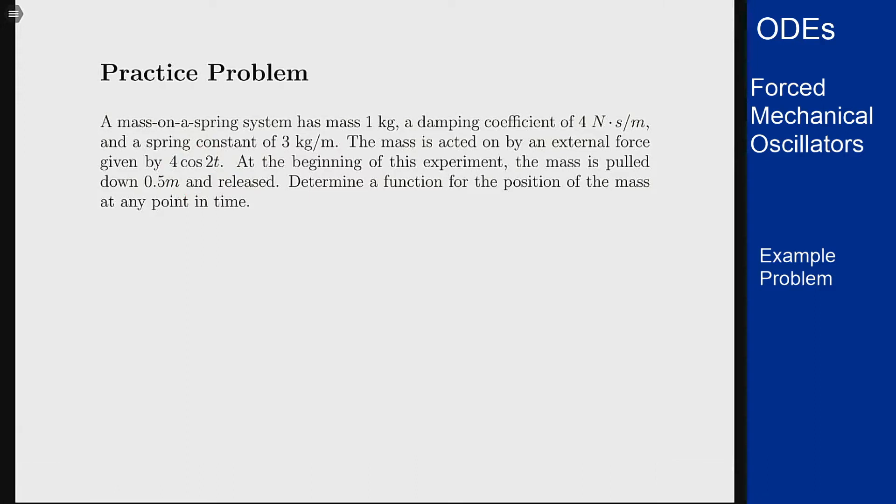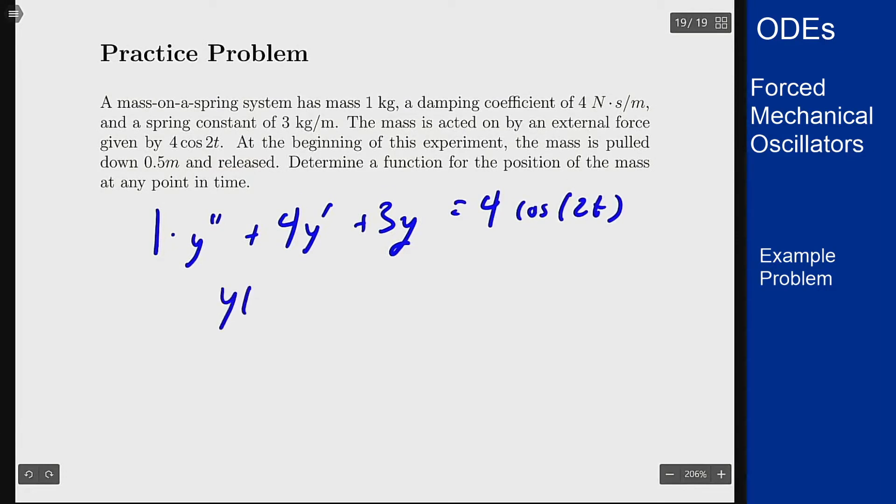Let's first start by writing the differential equation that governs this system. With a mass of one kilogram our first coefficient is one times y double prime, the damping coefficient of four means we have four times y prime, and a spring constant of three newtons per meter means this is three y, and our forcing function is four cosine of two t. With initial conditions y of zero is 0.5 and y prime of zero is 0 because the mass is released so its initial velocity is 0.